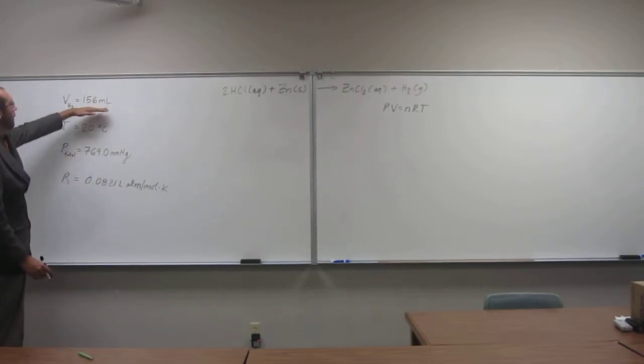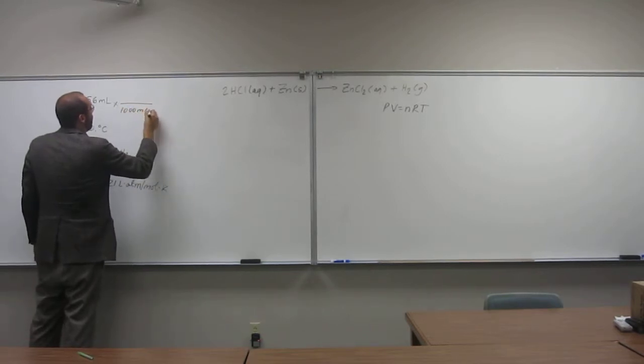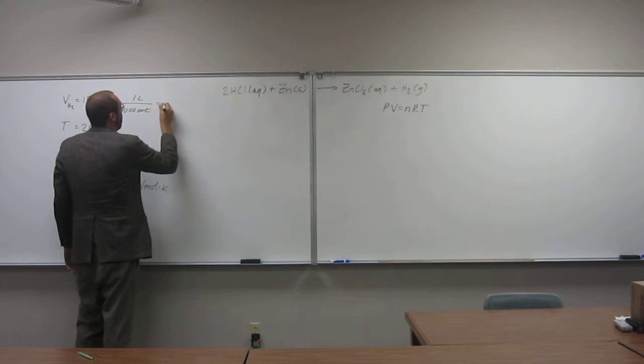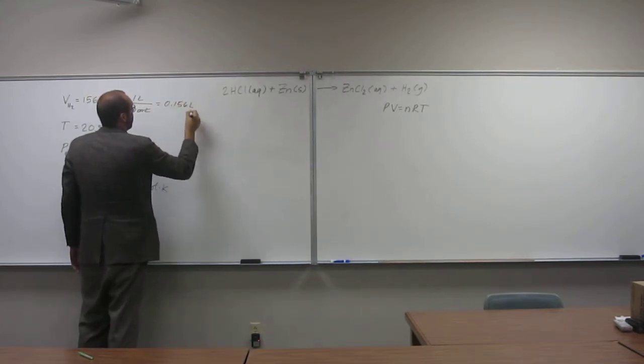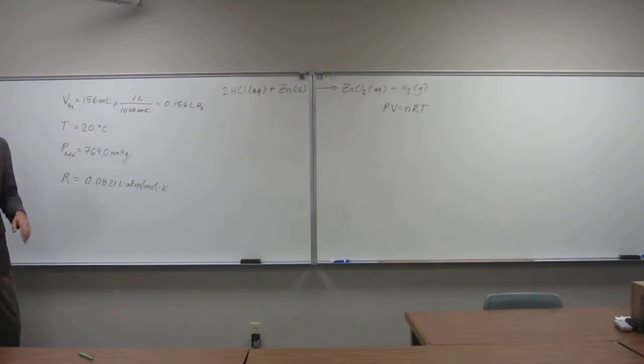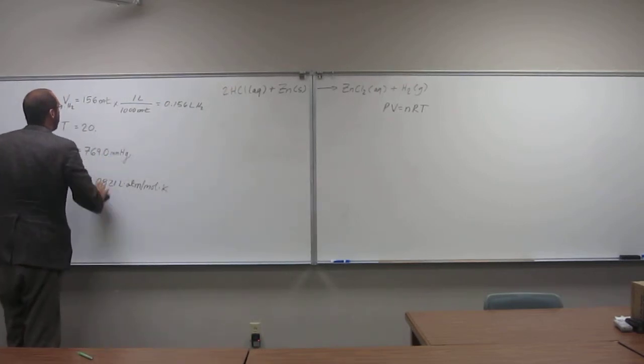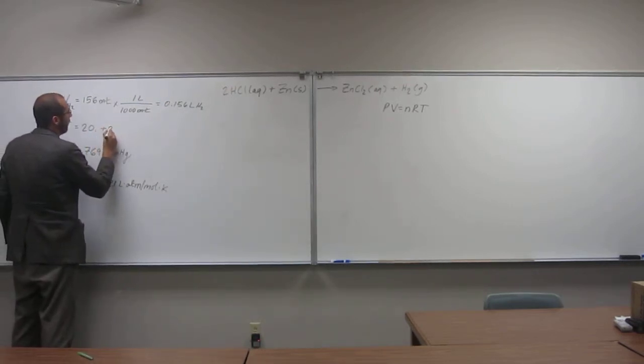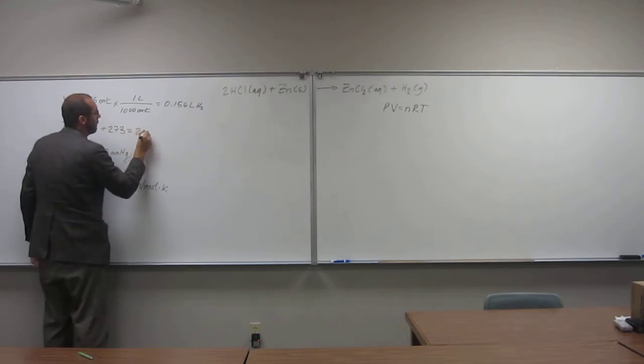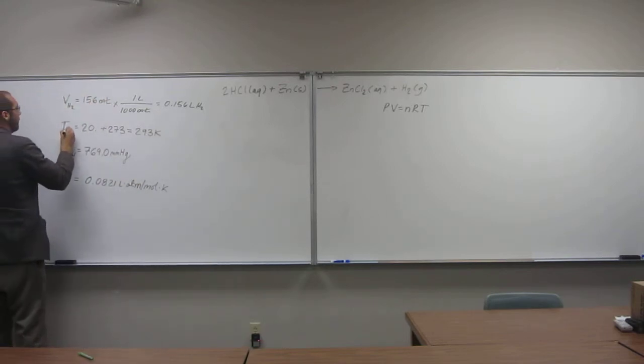Milliliters, we're going to have to convert that to liters. Is everybody okay with that? So that's how many liters of hydrogen gas we get. The temperature of the atmosphere, the temperature of the system, is also going to be the temperature of hydrogen gas. We can just take this 20 and convert it to Kelvin: 293 Kelvin. That would be the temperature of H2.